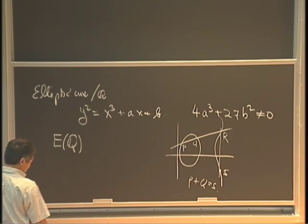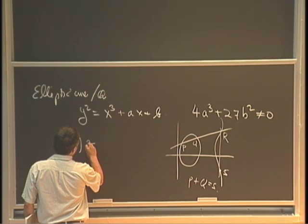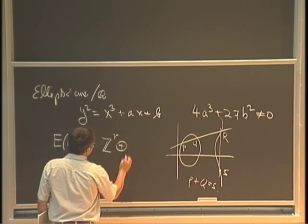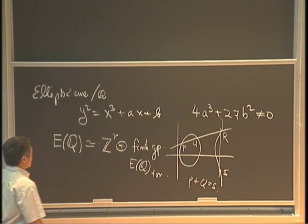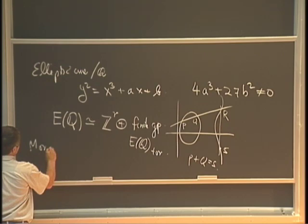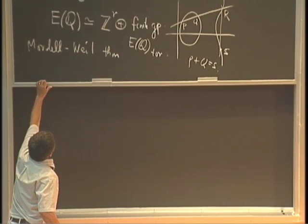It was conjectured by Poincaré that this group of rational points is finitely generated. This is actually the theorem proved by Mordell in the 1920s. So I write E(Q) is isomorphic to a finite torsion group direct sum Z^r. This is the Mordell-Weil theorem.